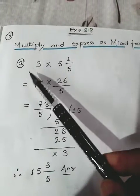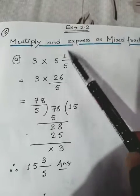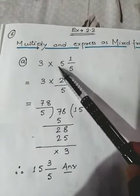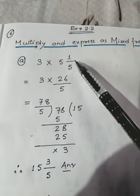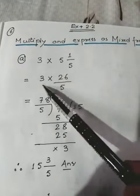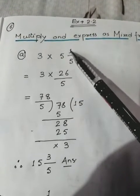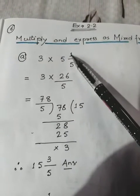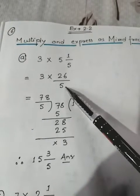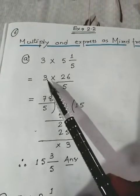Sum number (a) is 3 into 5 1/5. You see it is in mixed fraction form, so we have to convert it into improper form. 3 × 5 = 15, 15 + ... wait — 5 × 5 = 25, 25 + 1 = 26, so it becomes 26/5.